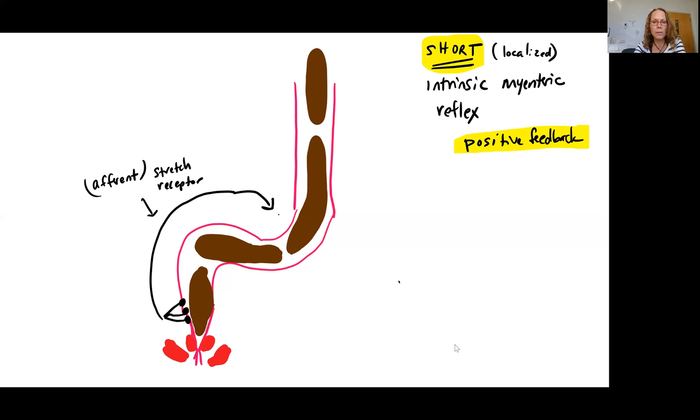This stretch receptor neuron, or the stretch receptors are stimulated. The afferent neuron is stimulated. That then is going to stimulate an efferent motor neuron, which is going to stimulate peristalsis. So you're going to have peristalsis at the sigmoid colon and also at the rectum, really helping to get more material into the rectum.